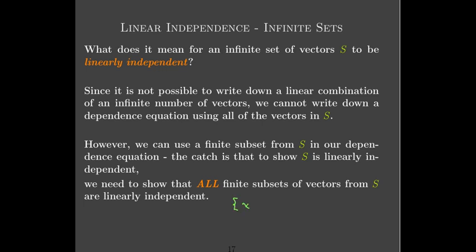Going back to our powers of x example: if we take any finite subset, these are all distinct powers — all different numbers. If I take any finite subset, I'm taking polynomials of different degrees. And any set of polynomials with different degrees we know is linearly independent. So we can say, based on that previous theorem, that this set is linearly independent.